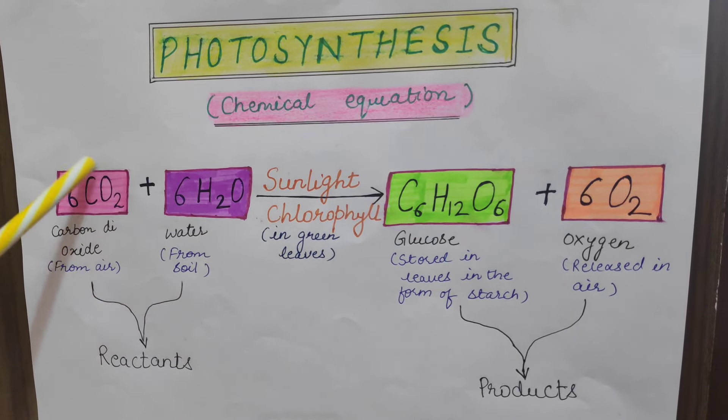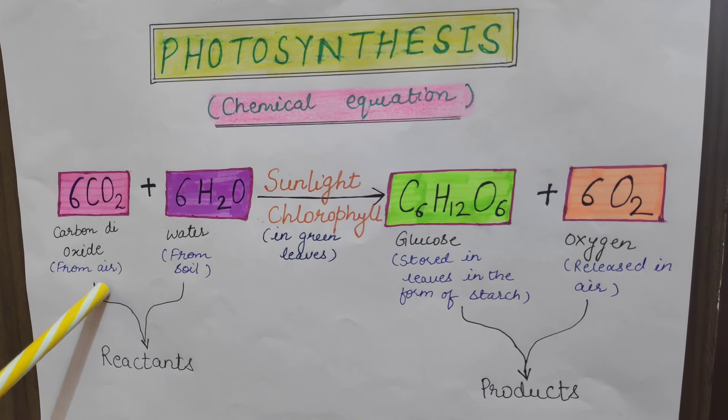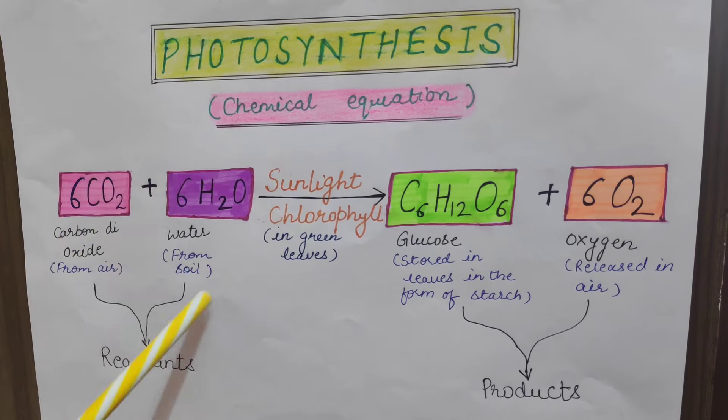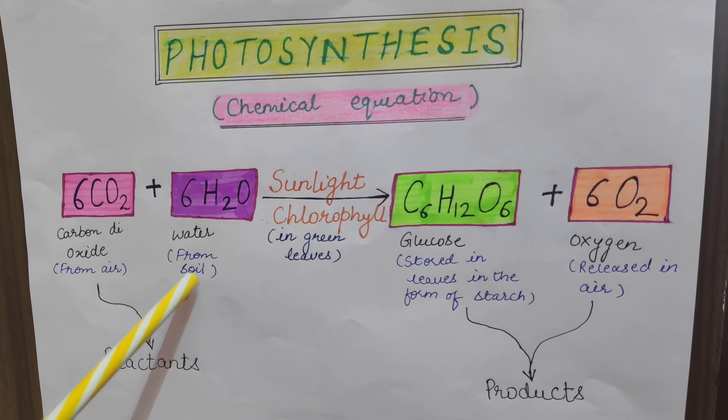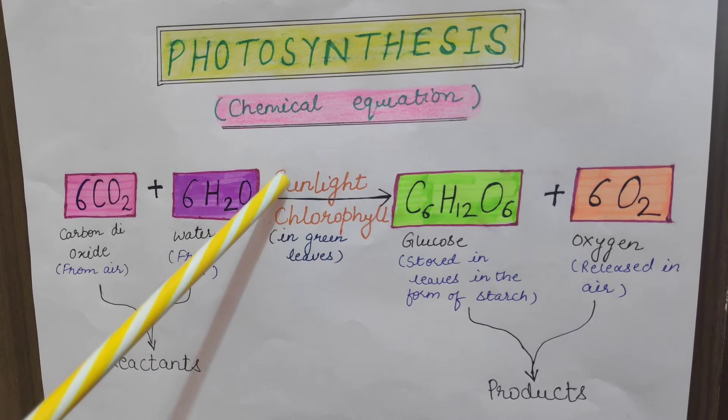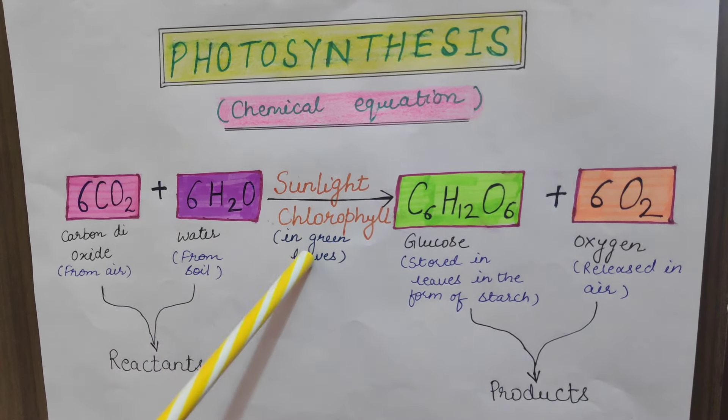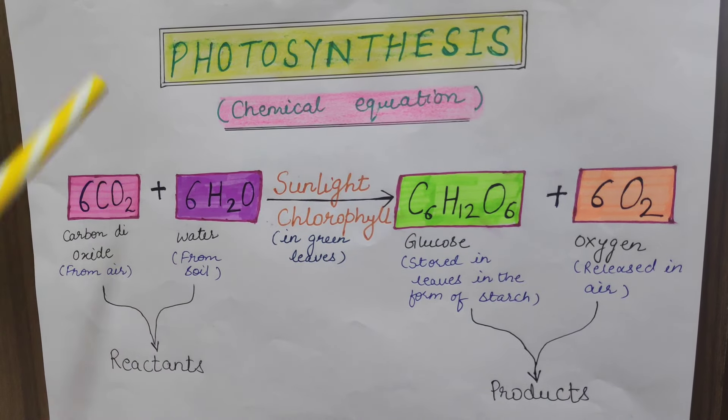Carbon dioxide is obtained from air through stomata which are present in the leaves. Water is absorbed from soil through roots. Sunlight, the plant gets sunlight from the sun. And chlorophyll is present in green leaves as well as in young stems.